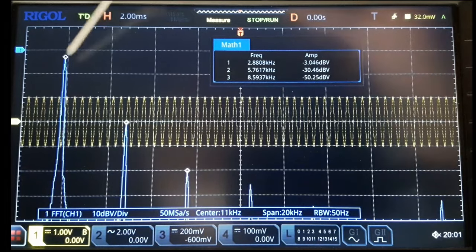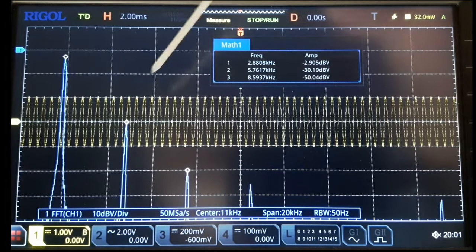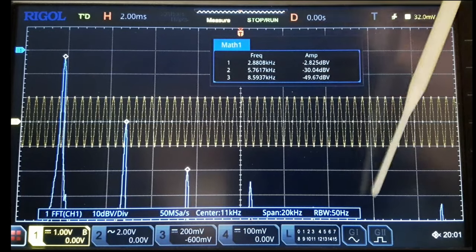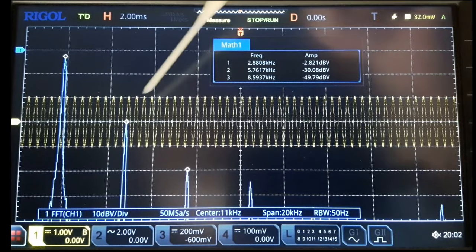So as we start turning our output down, our junk here, our second harmonic, third, fourth, and all the rest of them, start to decrease faster.